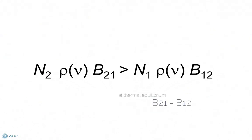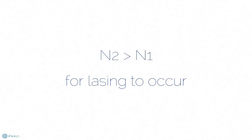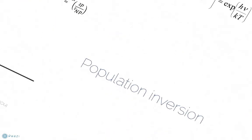Hence, we can equate the right-hand side of these equations as shown here. At thermal equilibrium, the Einstein's coefficients B12 and B21 are equal, so we can eliminate these from this statement. Therefore, we need N2 to be greater than N1 for lasing to occur. The term given for this case is called population inversion.